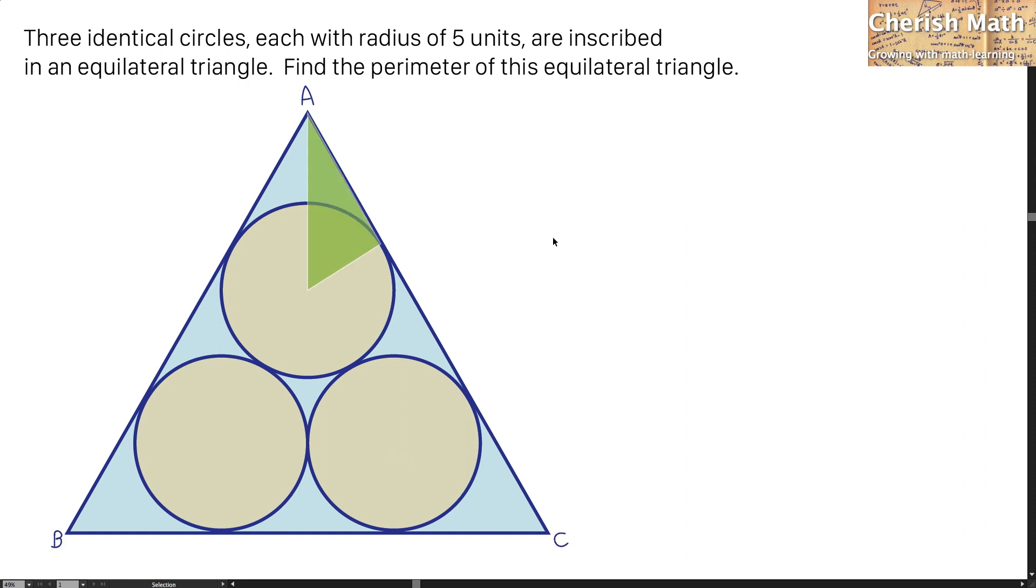I begin with joining a line from the corner A to the center of the top circle. And this green triangle that I form up here is in the right angle. Because line AC is a tangent to the circle on the top and the circle at the bottom right.